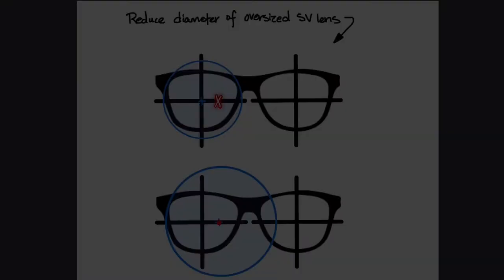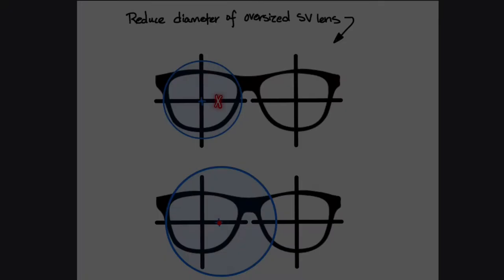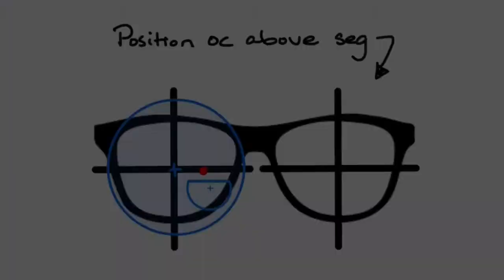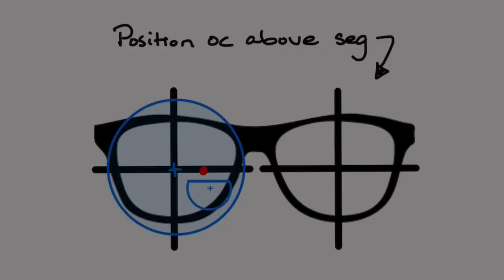Prism for decentration or decentration on the blank is commonly used on oversized single-vision lenses to help ensure lens cutout and it's commonly used on segmented lenses to position the major reference point at a specific point above the segment.